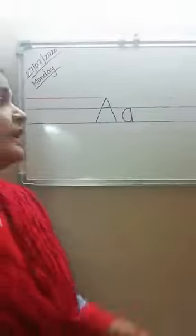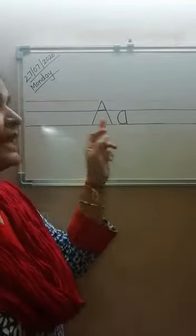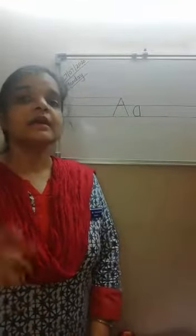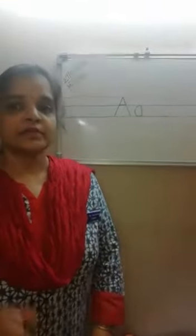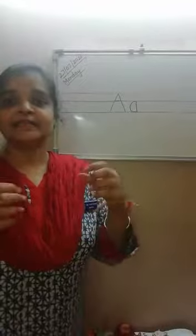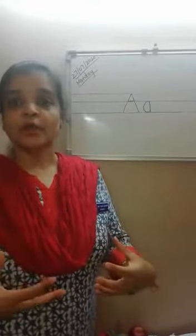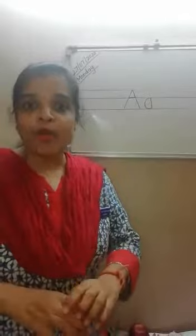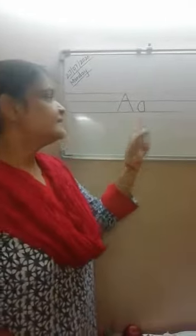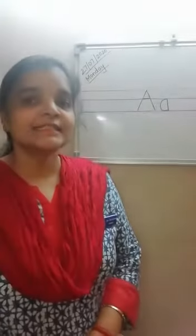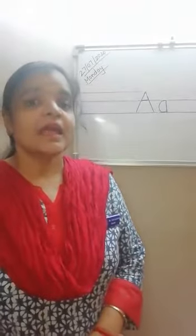Now, this small a has a sound. What sound does this small a make? Like the cat makes the sound meow meow, the dog makes the sound bho bho — like that, this small a makes the sound 'aah'. What sound does it make? Aah.